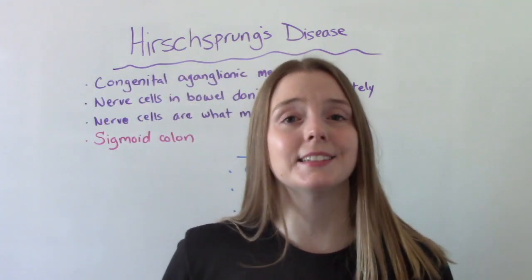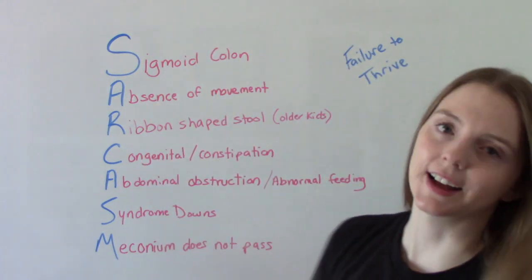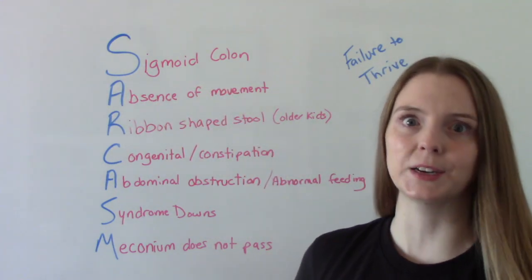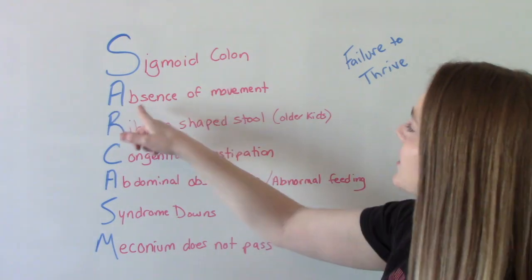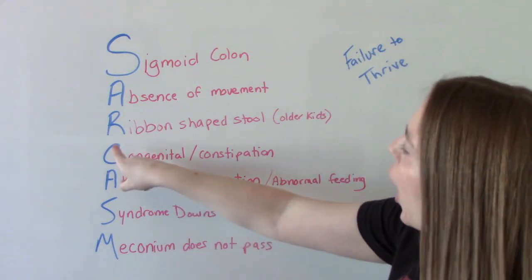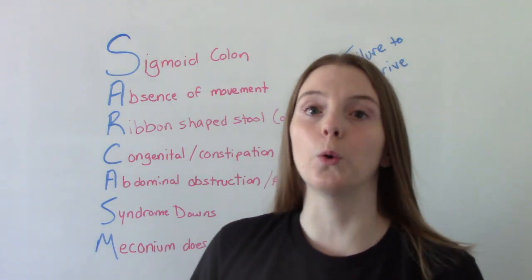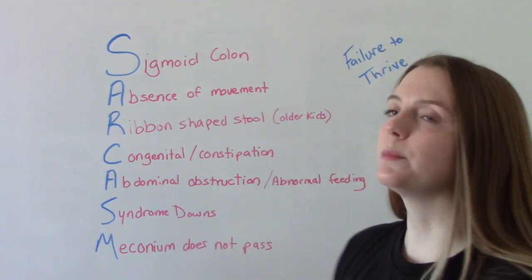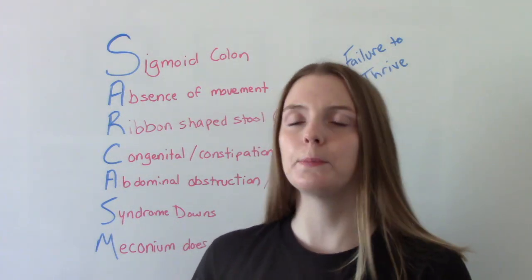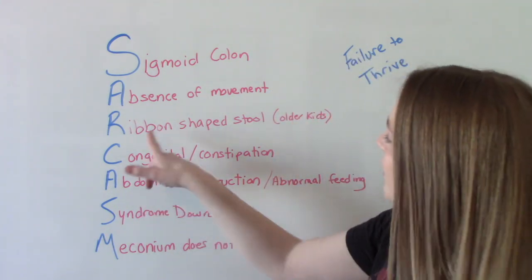Now let's talk about signs and symptoms. A memory tool to help you remember is SARCASM. S stands for sigmoid colon, because it affects the sigmoid colon. A is for the absence of movement — the absence of peristalsis of the bowel. R is for ribbon-shaped stool, which usually occurs in the older child. If caught in the older child, the biggest symptom is chronic constipation, and when they do have a bowel movement, they have ribbon-shaped stool.